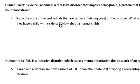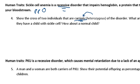Moving on to number four — this one goes off the screen a little bit, but I'll read it to you. It says sickle cell anemia is a recessive disorder that impairs hemoglobin, a protein that transports oxygen in your bloodstream. You've seen pictures of blood cells — they look sickle-shaped instead of the normal circle. It says show the cross of two individuals that are carriers. Carriers are heterozygous — another term for carriers. Carriers is used when it's a disorder, meaning they're carrying that recessive disorder. We call them heterozygous when they're carrying just a normal trait.